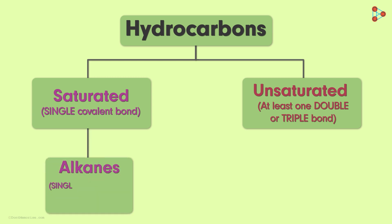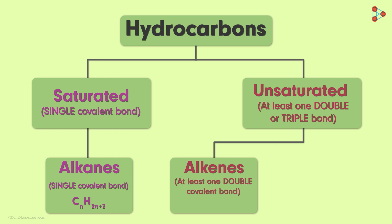Alkanes are the saturated hydrocarbons and their formula is CnH2n+2. Alkenes are unsaturated hydrocarbons with at least one double covalent bond. Their formula is CnH2n.